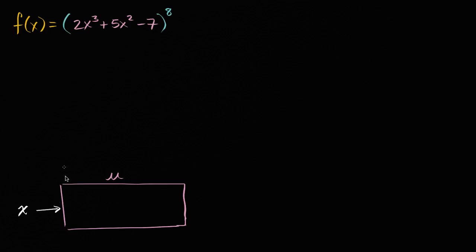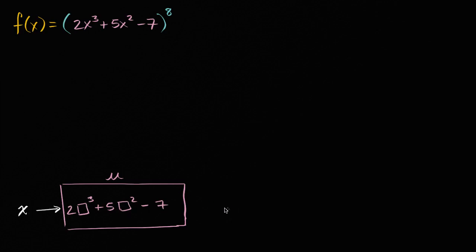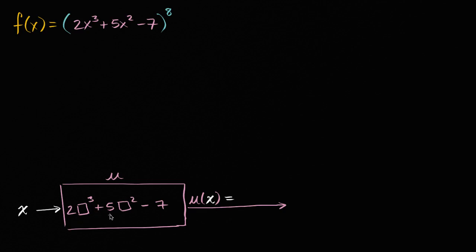Let's call that the function u. So whatever you input into that function u, you're going to get two times that input to the third power plus five times that input to the second power minus seven. When you input an x, you output u of x, which is equal to two x to the third power plus five x squared minus seven. That is u of x.